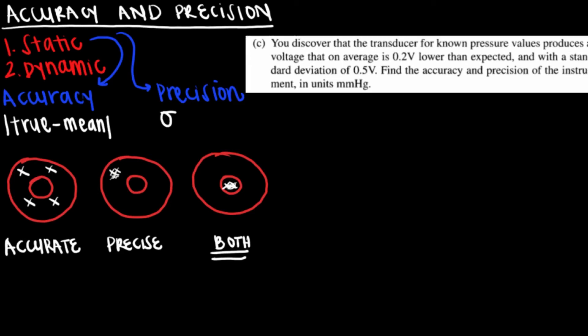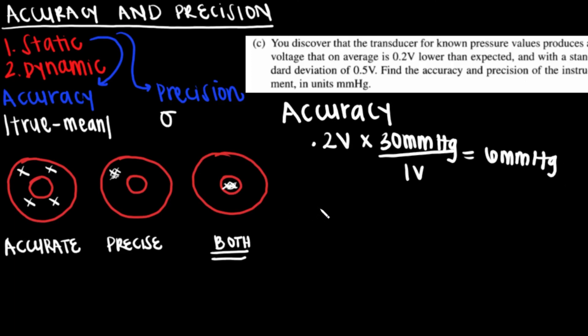In Quiz 1 of 2017 Question 1, the following is asked. Here the question gives the accuracy in terms of volts, which can be inferred from the language, on average is 0.2 volts lower than expected. To find the absolute accuracy in terms of pressure, the sensitivity which was previously found as 1 volt per 30 millimeters mercury can be used. Using dimensional analysis, the value is found by taking 0.2 volts and multiplying by 30 millimeters mercury over volts.